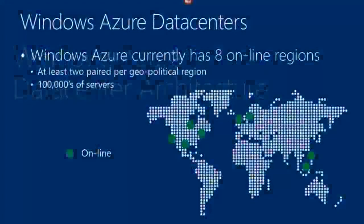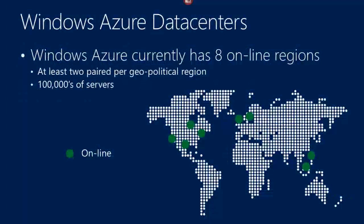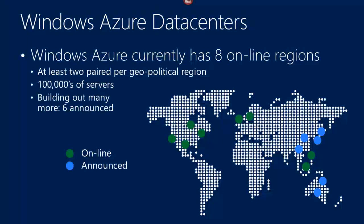Let's start with the data center architecture. Right now we've got eight online regions across the world — four in the U.S., two in Europe, two in Southeast Asia. This already constitutes on the order of hundreds of thousands of servers. We're currently building out — and this is what we've announced — there are buildouts we haven't announced yet. You can see we've got six more that we've just announced.